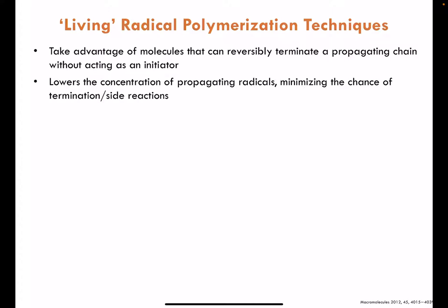The approach here touches on the concepts of what a living radical polymerization is. A living radical polymerization would be able to take advantage of molecules that can reversibly terminate a propagating chain end without acting as an initiator. The key word here is reversibly terminate — we expect some bonding to occur to the free radicals at the end of a propagating chain, turning off polymerization momentarily. Because this is a reversible step, this fragment can fall off and reactivate, regenerating a radical for propagation at a later step.